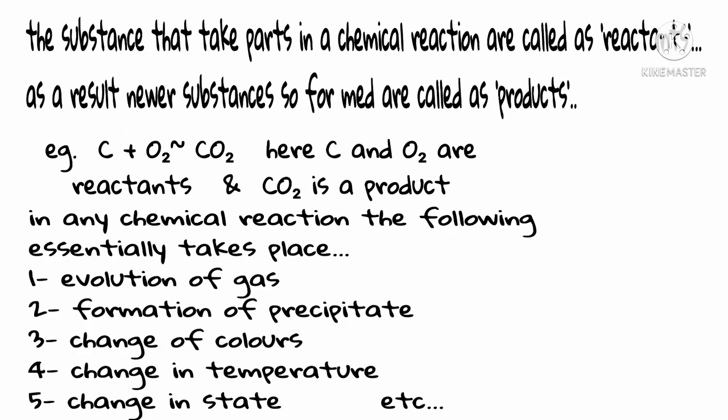The substances that take part in the chemical reaction are called as reactants. As a result, new substances so made are called as product. For example, C plus O2 give rise to CO2. Here C and O2 are reactants and CO2 is a product.